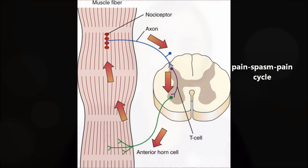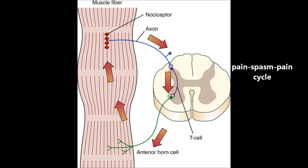I'll be using intermittent traction as part of his treatment plan. The benefit of using traction in this case is that it will promote relaxation of the paraspinal muscles by interrupting the pain-spasm-pain cycle. The changes in muscle tension during intermittent traction stimulate Golgi tendon organs to inhibit alpha-motor neuron firing, which allows for muscle relaxation.